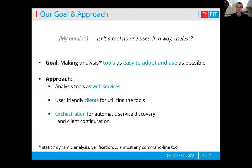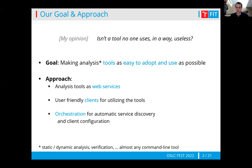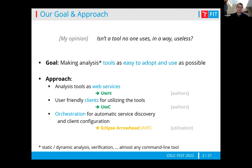Our approach to doing this is basically three steps. First, we want to transform tools to web services. Then we want to access those services through some sort of user-friendly clients. And then finally, we use orchestration for automatic discovery and configuration, so that the clients can discover available tools and configure themselves for different tools automatically. To do this, we have three components. The first is Unite, which is our server and client. For the orchestration, we use the Eclipse Arrowhead framework, which basically allows the orchestration.